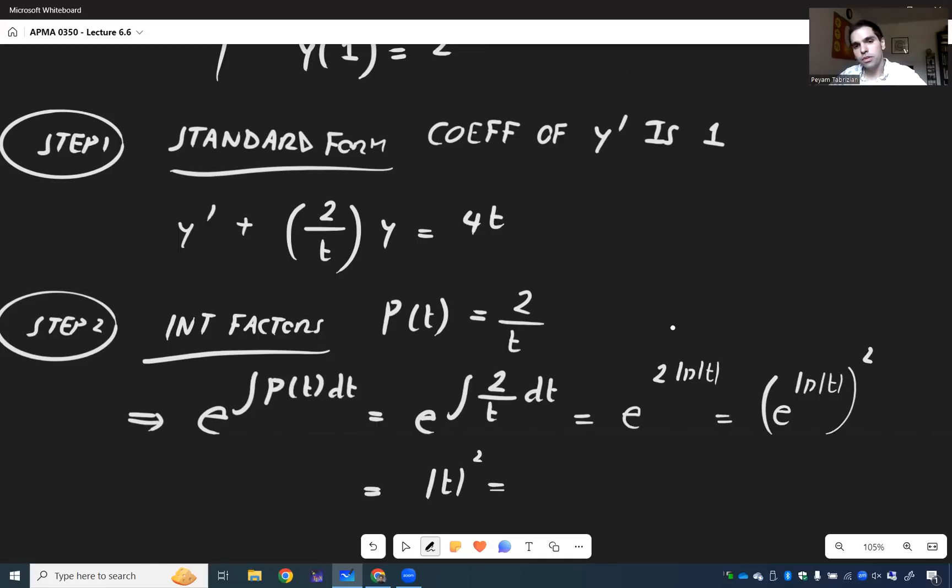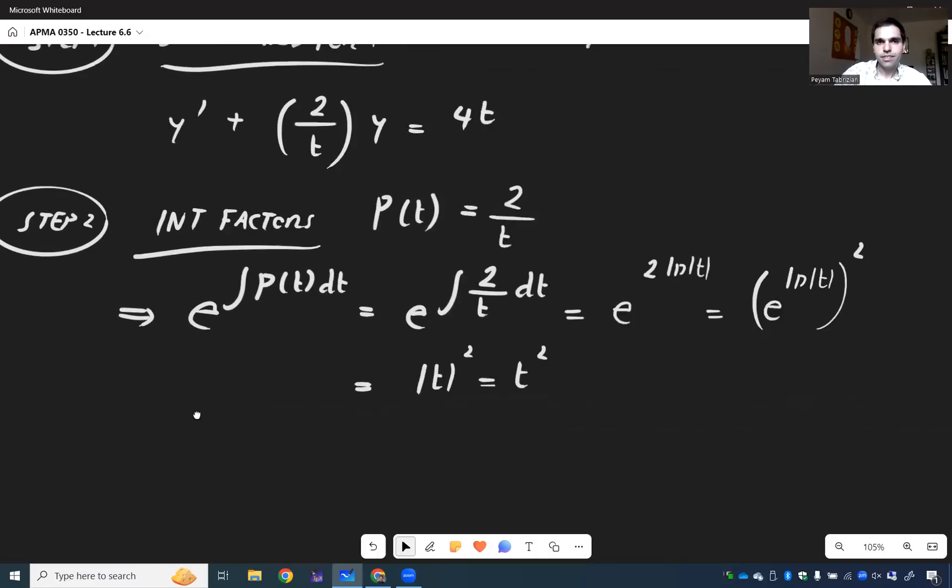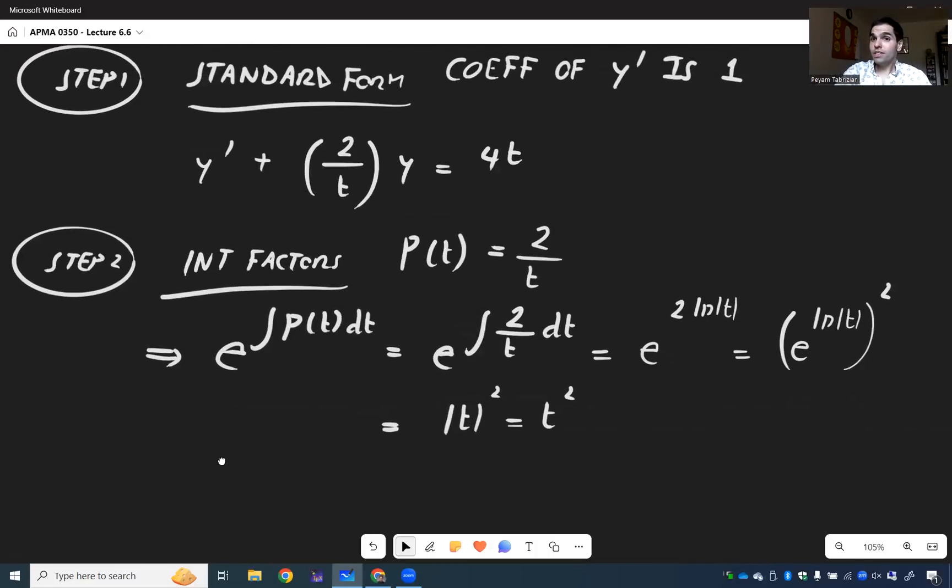And we're left with technically absolute value of t squared, but that's the same thing as t squared, because two is even. So, which is very interesting because the integrating factor is very easy here. It's not always exponential. So it could be t squared. So what's the idea?